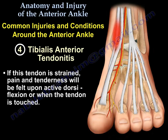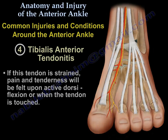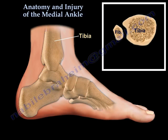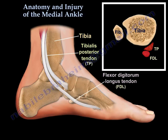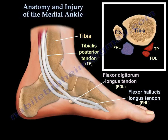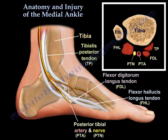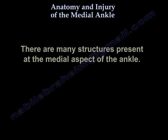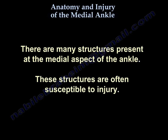Anatomy of the medial ankle includes the tibia, the tibialis posterior tendon, and the flexor digitorum longus tendon. Here you can see the posterior tibial artery and nerve and its calcaneal branches, as well as the flexor retinaculum, the Achilles tendon, and the bursa. There are many structures present at the medial aspect of the ankle that are often susceptible to injury.